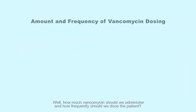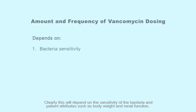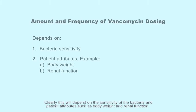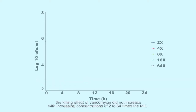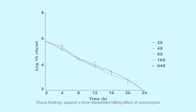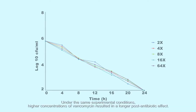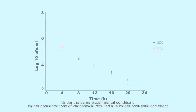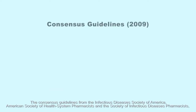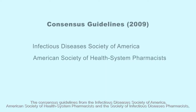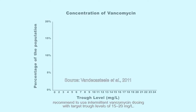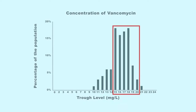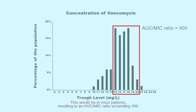How much vancomycin should we administer and how frequently should we dose the patient? This would depend on the sensitivity of the bacteria and patient attributes such as body weight and renal function. In vitro models using standard concentrations of S. aureus and coagulase-negative staphylococci showed that the killing effect of vancomycin did not increase with increasing concentrations of 2 to 64 times the MIC, supporting a time-dependent killing effect. Higher concentrations resulted in a longer post-antibiotic effect. Consensus guidelines from the Infectious Diseases Society of America, American Society of Health System Pharmacists, and the Society of Infectious Diseases Pharmacists recommend intermittent vancomycin dosing with target trough levels of 15 to 20 mg per litre, resulting in an AUC over MIC ratio exceeding 400.